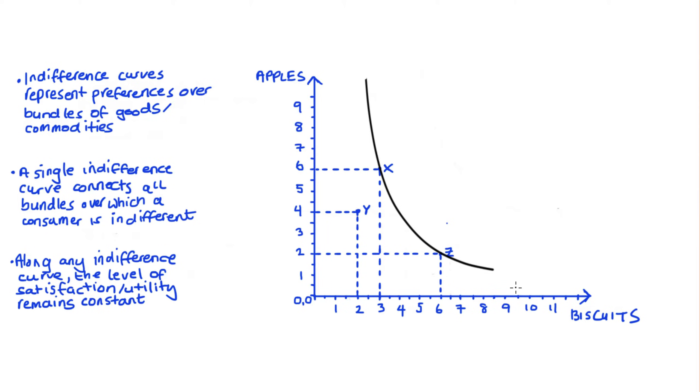Now there are going to be many indifference curves which track all of the preferences over all of the possible bundles of apples and biscuits. So I can draw in more indifference curves like this. And I can also label them. I'm going to put IC1 for indifference curve 1, IC2 and IC3. Whilst each individual line identifies all of the bundles that I am indifferent between, each indifference curve represents a different level of satisfaction. And sometimes we call this utility.